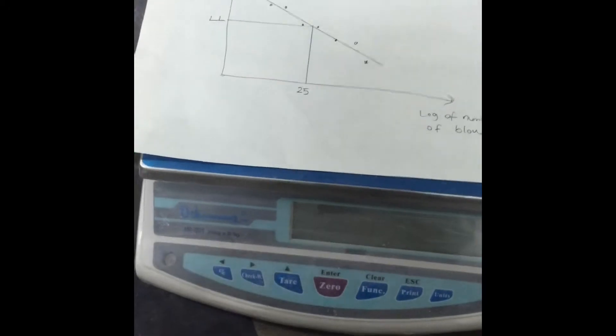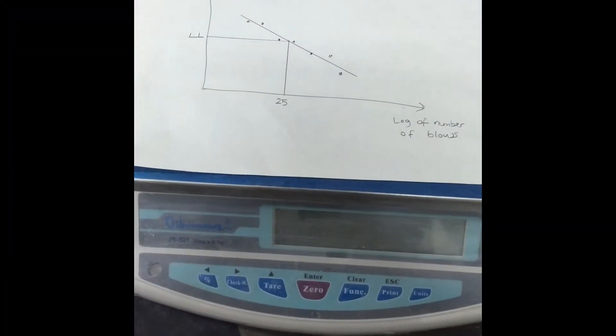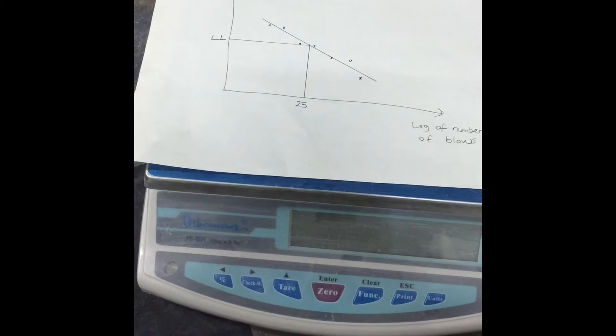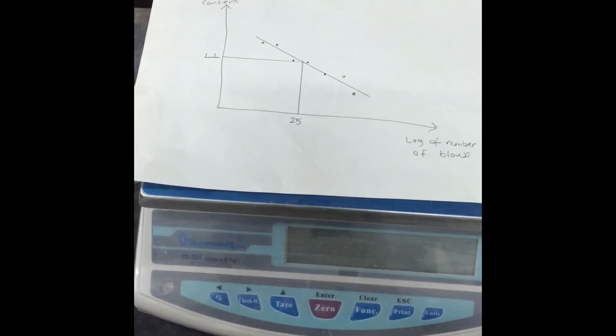We have our minimums with the graph of water content against log of number of blows. The liquid limit is the water content at 25 blows.